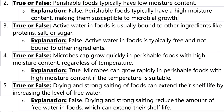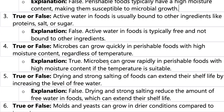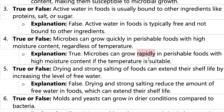Number four: microbes can grow quickly in perishable food with high moisture content regardless of temperature. This is true because high moisture content means higher free water. They say regardless of temperature — any temperature — but if the temperature is also suitable, growth is even more rapid.